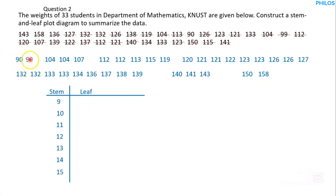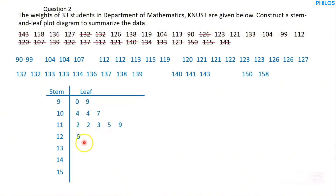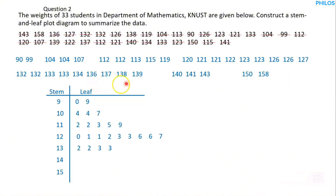Now write the leaves. For the 90s: leaves are 0 and 9. For the 100s: leaves are 4, 4, 7. For the 110s: leaves are 2, 2, 3, 5, 9. For the 120s: leaves are 0, 1, 1, 2, 3, 3, 6, 6, 7. For the 130s: leaves are 2, 2, 3, 3, 4, 6, 7, 8, 9.